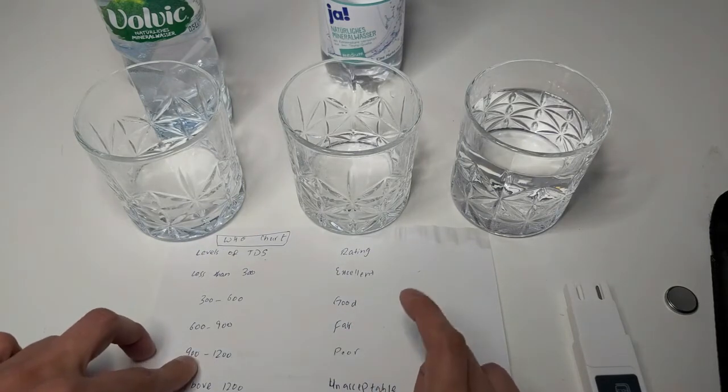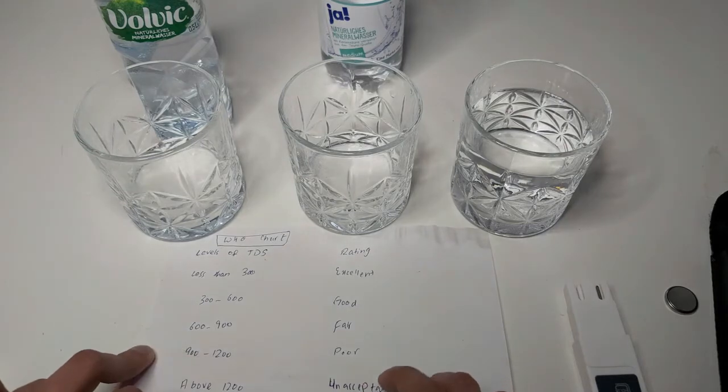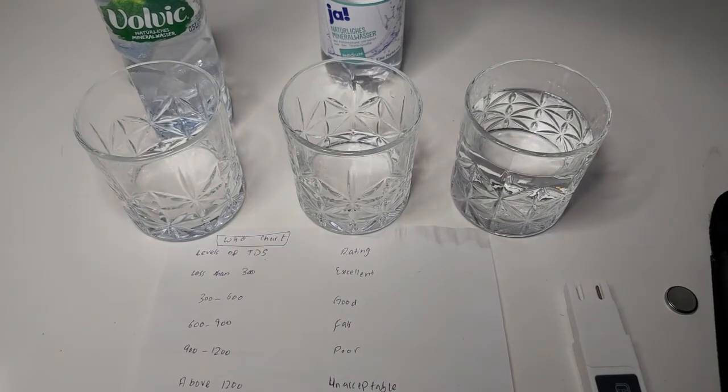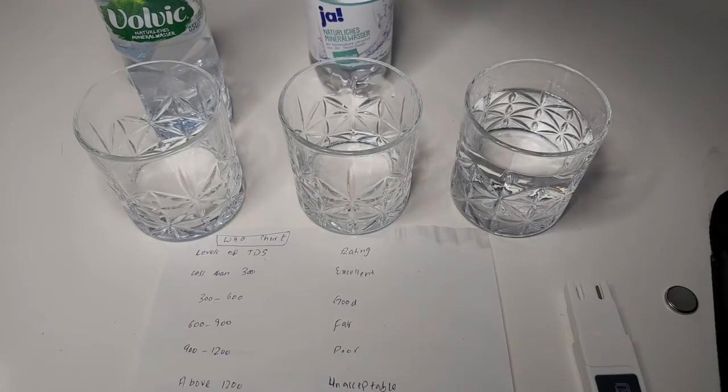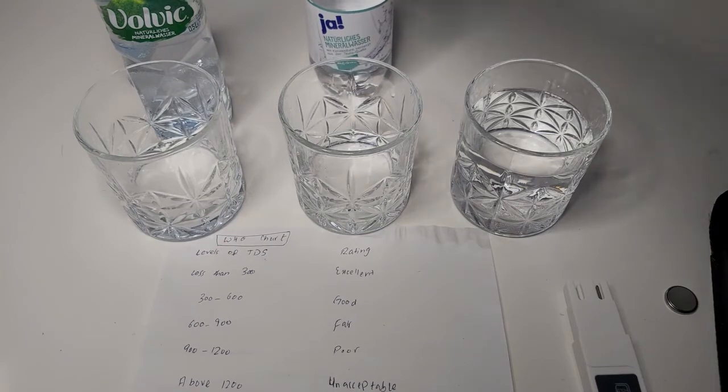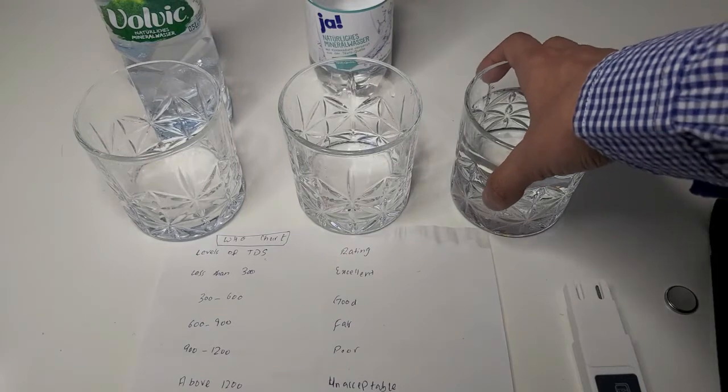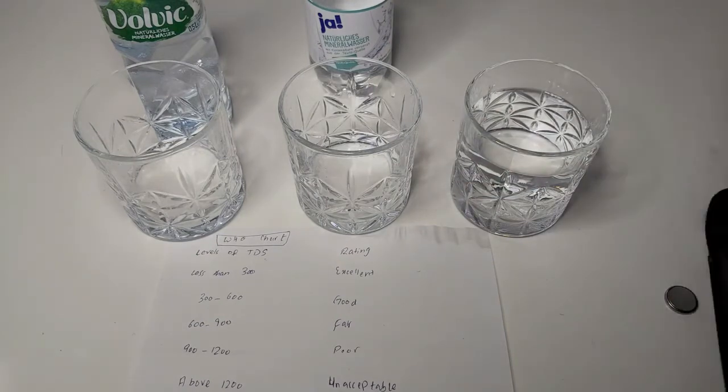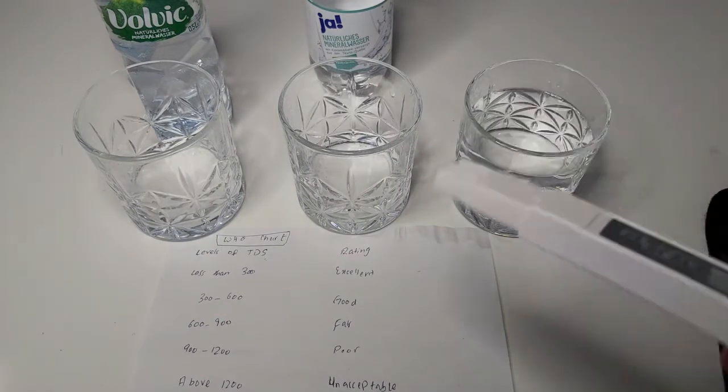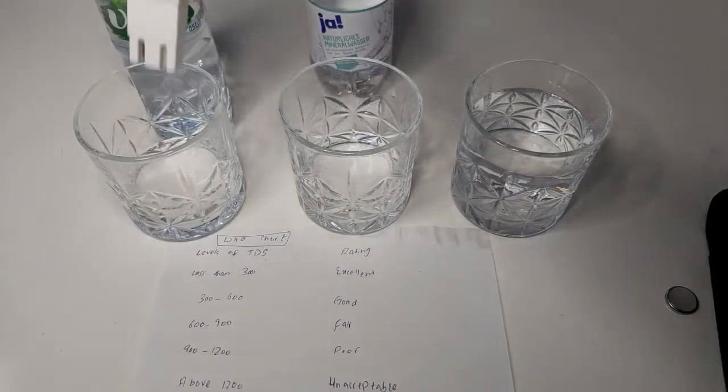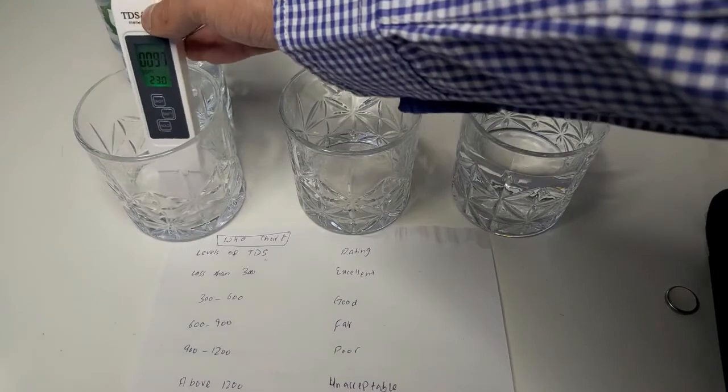First of all we have Volvic natural mineral water. Then we have natural mineral water with gas by Yaa RD. Lastly we have our tap water in NRW, Germany. We will see if it is safe to drink or not. So first of all we will do the reading with Volvic mineral water.